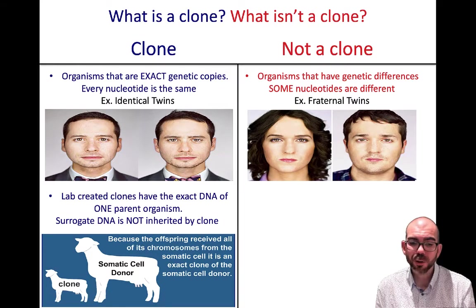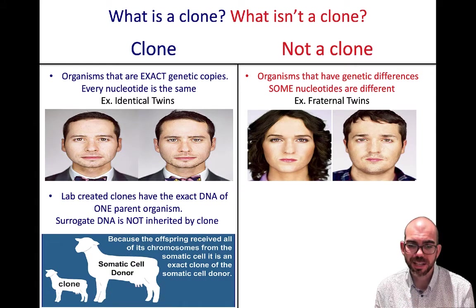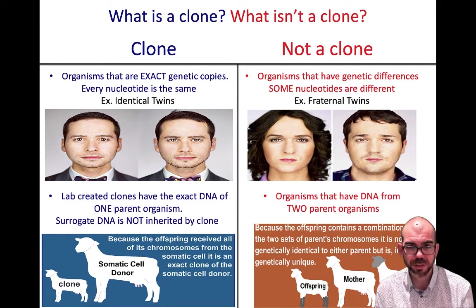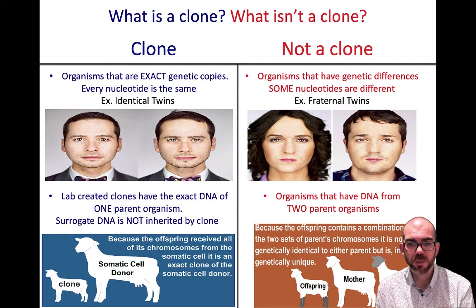Clones are typically created in a lab and come from only one parent. There is a surrogate or someone who donates the DNA, and that DNA is faithfully replicated to create an organism with the same sequence. Non-clone organisms have two or more parents, which causes the genetic diversity you see in them.